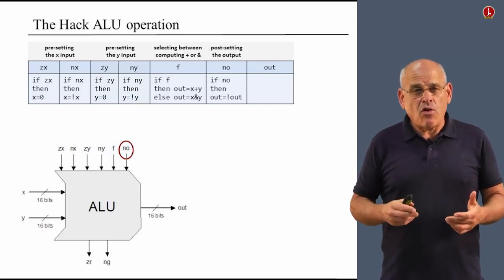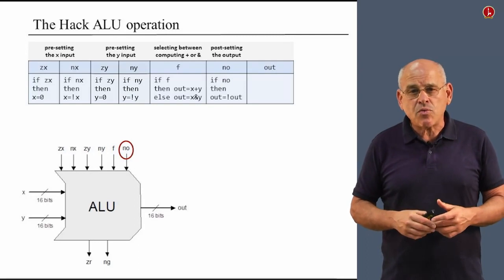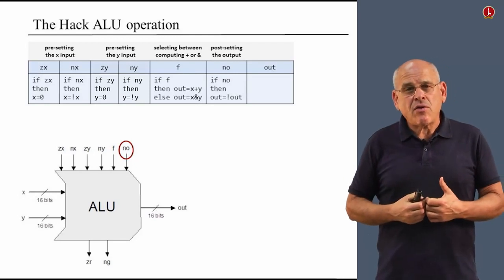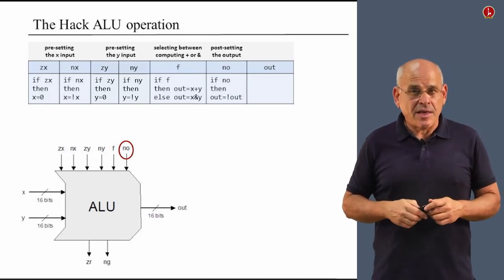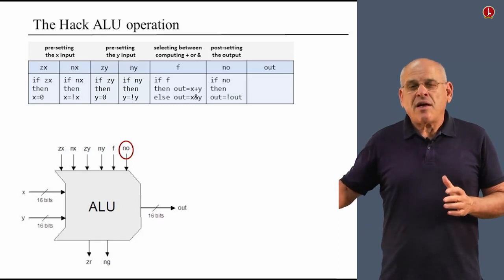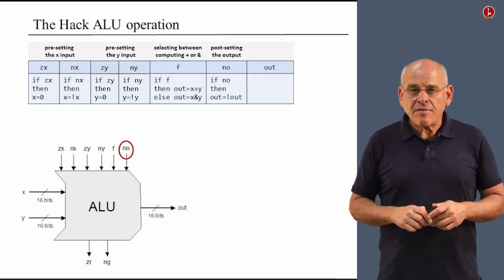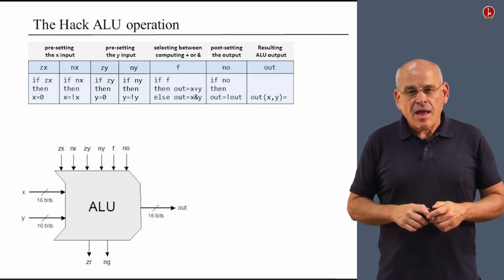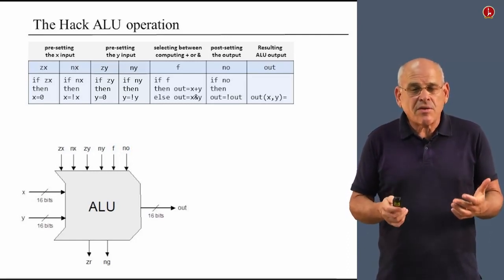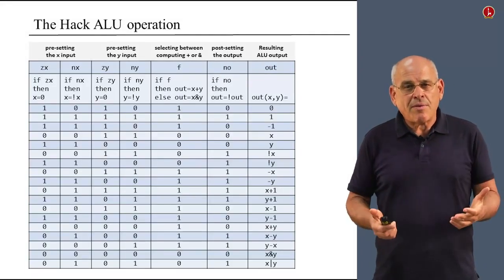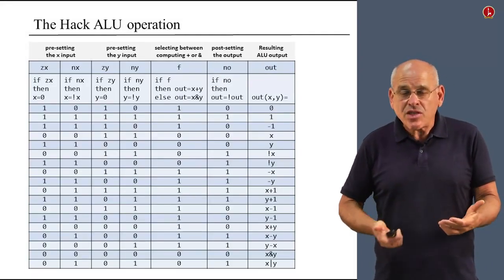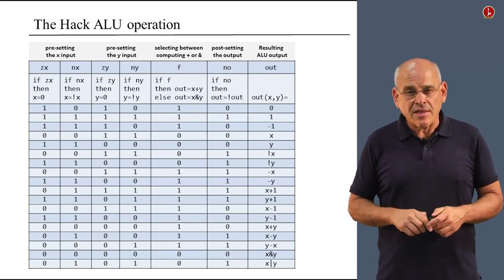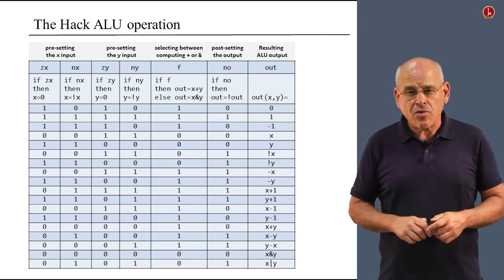And then we compute either addition or 16-bit and. Finally, we have the no bit. If the no bit is 1, we negate the resulting output, the output that we just computed. And if no is 0, we leave it as is. If we do all these operations one after the other, then what comes out is the desired function. And now that you understand this semantics, you can actually look at the table and try to convince yourself. You can actually prove that this table delivers the required results. And I will demonstrate to you how we can do it.